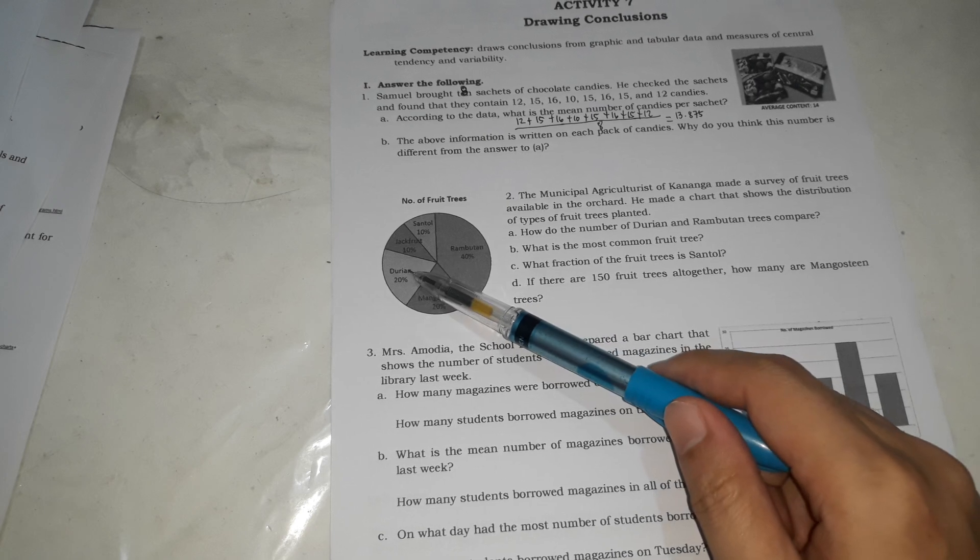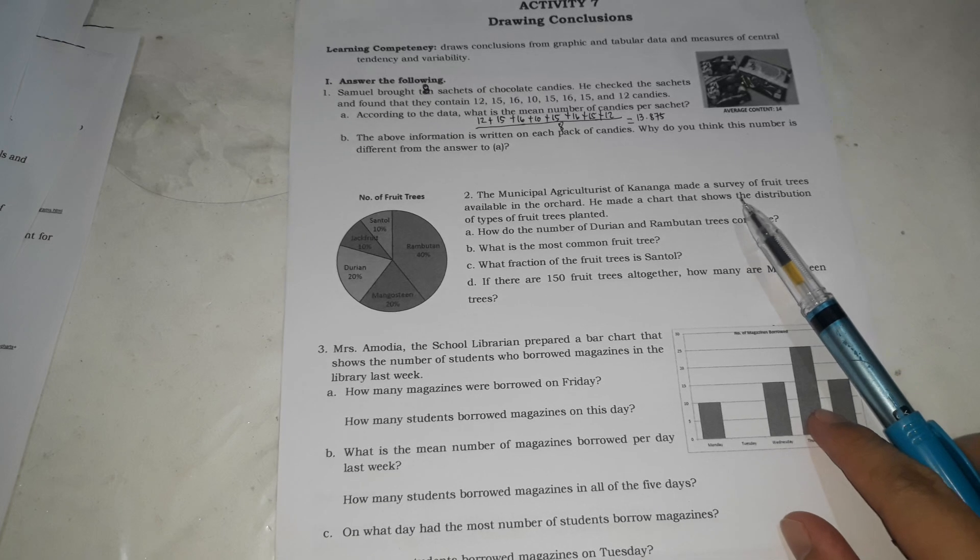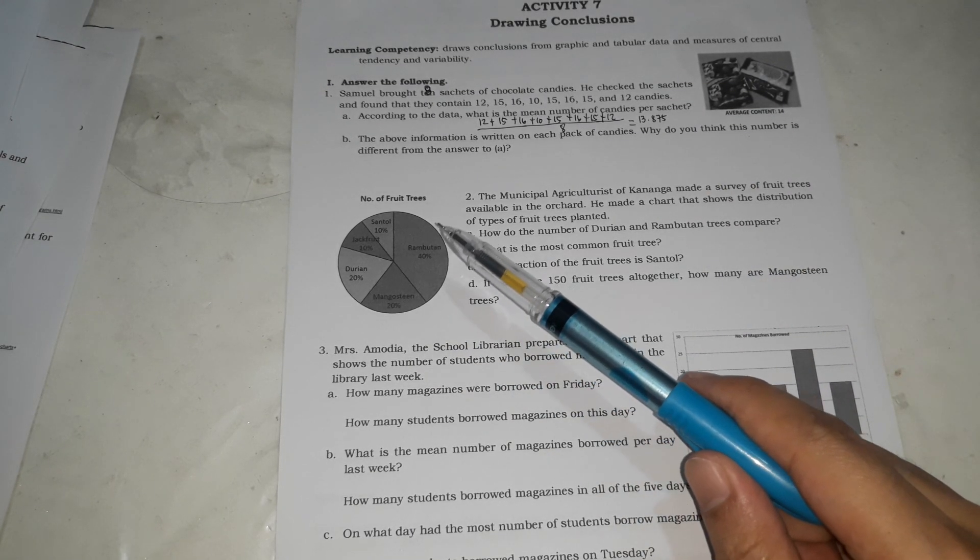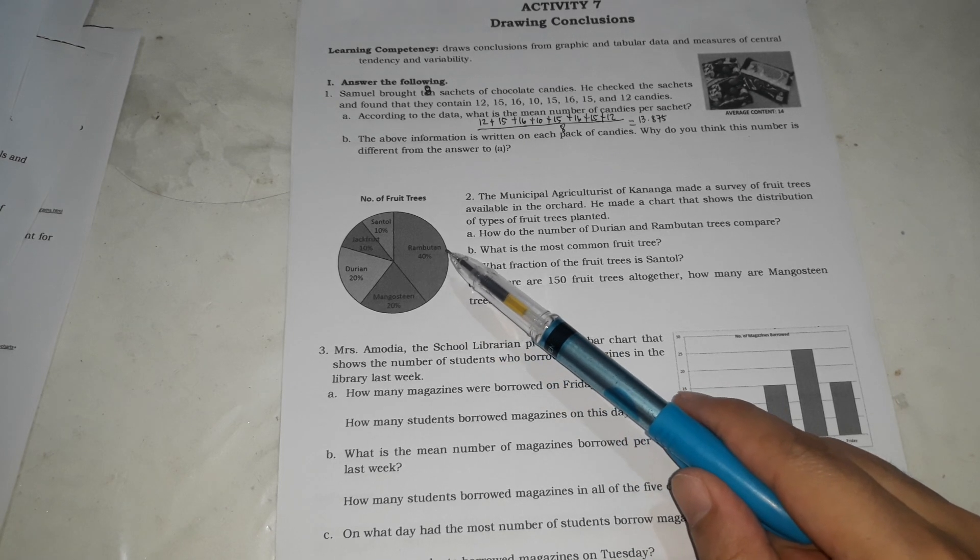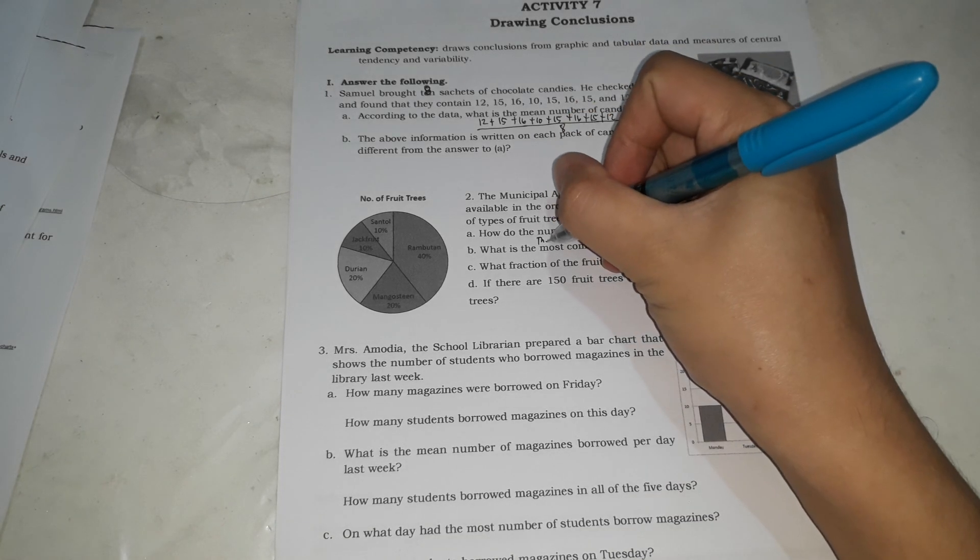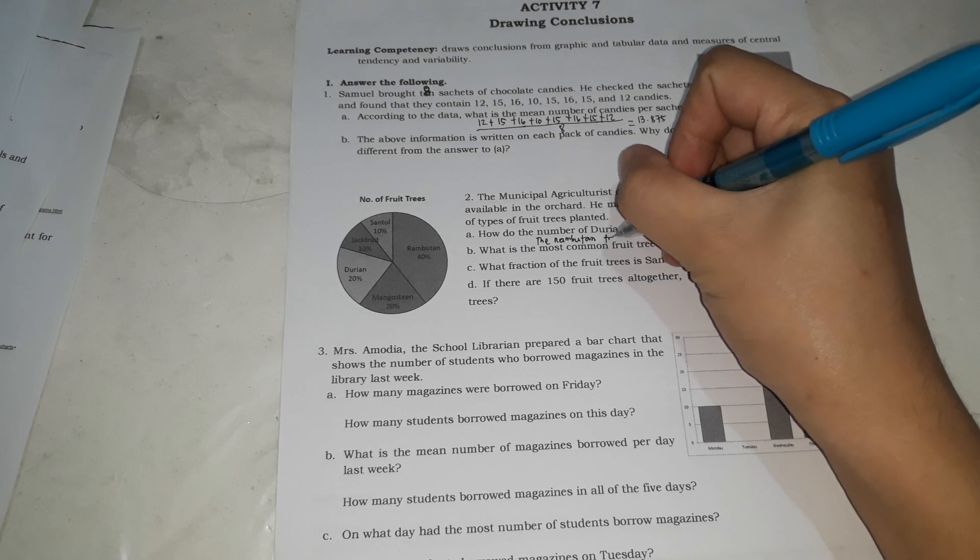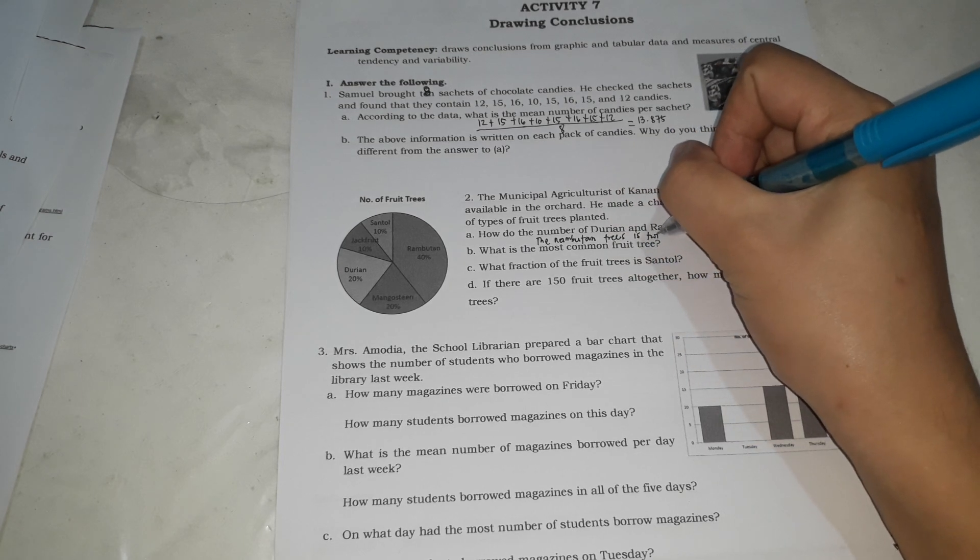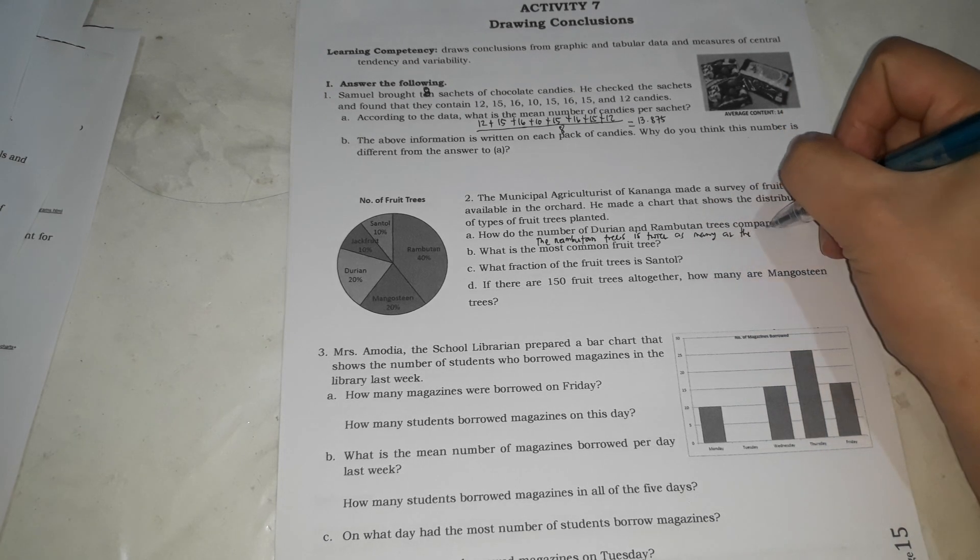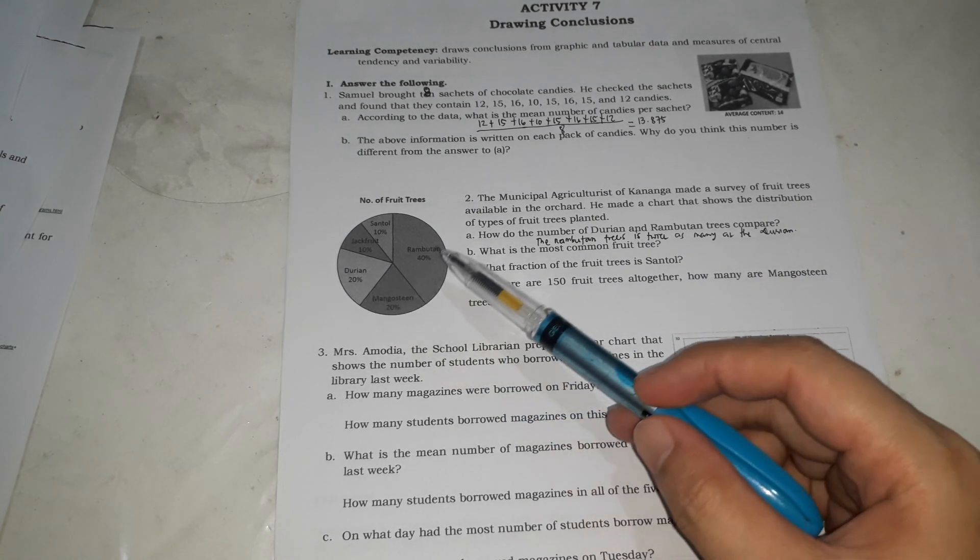How do the number of durians and rambutan trees compare? This is durian, 20, and rambutan is 40%. If you're going to compare them, what's their difference? 20%, 40%, isipin natin 20 durians at rambutan is 40%. Ibig sabihin, the durian, the rambutan is twice,